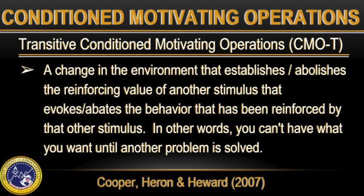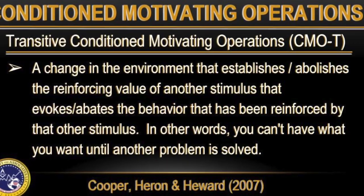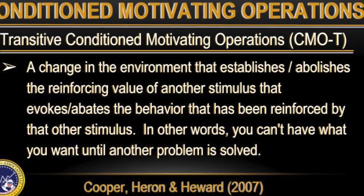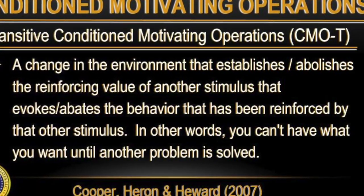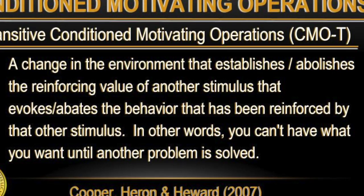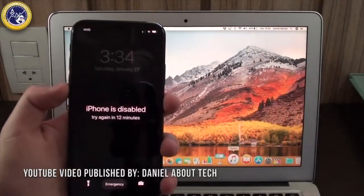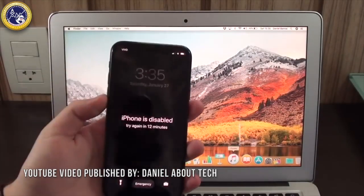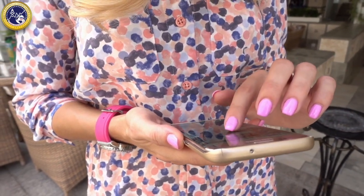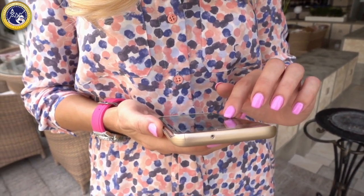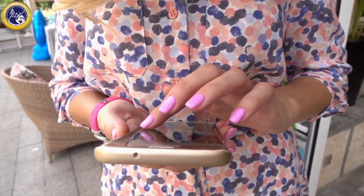The last type is the transitive conditioned motivating operation, or CMO-T: a change in the environment that establishes or abolishes the reinforcing value of another stimulus, which evokes or abates behavior that has been reinforced by that stimulus. In other words, you can't have what you want until another problem is solved. For example, if you want to check a text or email but your phone is locked and you don't have the password, the password becomes a CMO-T — its value is established because accessing the message is reinforcing, so you want the password just as much as you want to check that email.